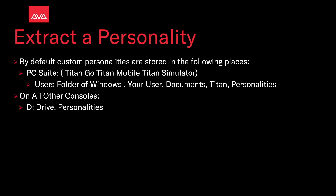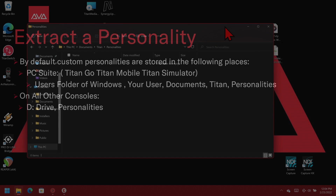Remember, by default custom personalities are stored in the following places. On the PC Suite, Titan Go, Titan Mobile, and Titan Simulator, it's in the Users folder of Windows: your User Name, Documents, Titan, Personalities. On all of the consoles, it'll be on the D Drive, Personalities folder.